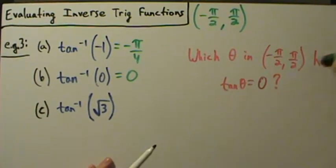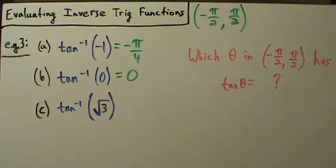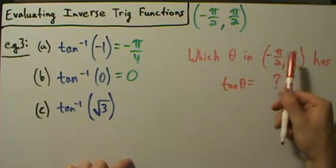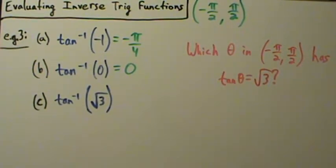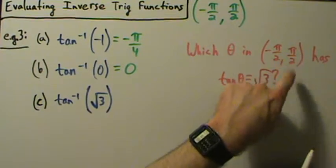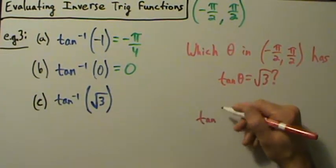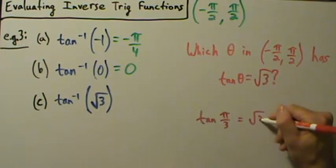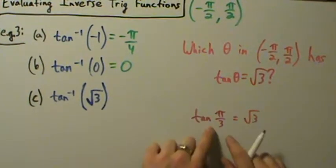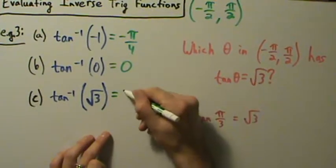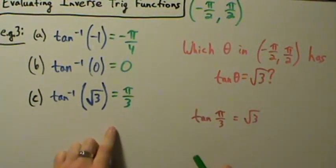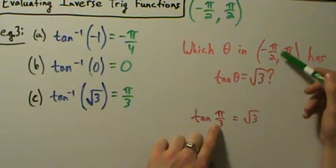For part C, we're looking at the square root of 3. Which theta inside the range of the inverse tangent function has tangent of theta equal to square root of 3? There are infinitely many values whose tangent is square root of 3, but only one is in this interval. Tangent of pi over 3 is the square root of 3, and pi over 3 is inside the interval. So the inverse tangent of square root of 3 is pi over 3.